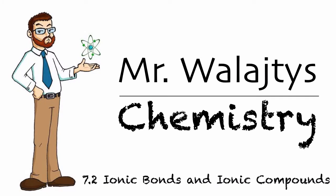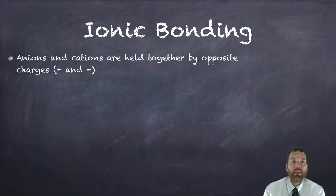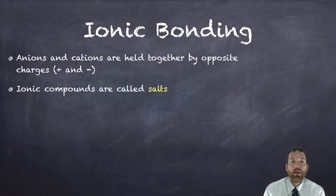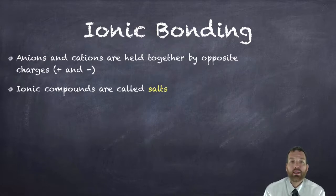In this video we're going to look at a type of bond called ionic bonds and how it can lead to the formation of an ionic compound. Ionic bonding is when anions and cations are held together by opposite charges — a positive charge formed when an atom loses electrons, and a negative charge formed when another atom gains electrons. Ionic compounds are also called salts. Table salt is a great example: it has sodium with a plus one charge and chlorine that gains a negative charge when it gains electrons from the sodium.